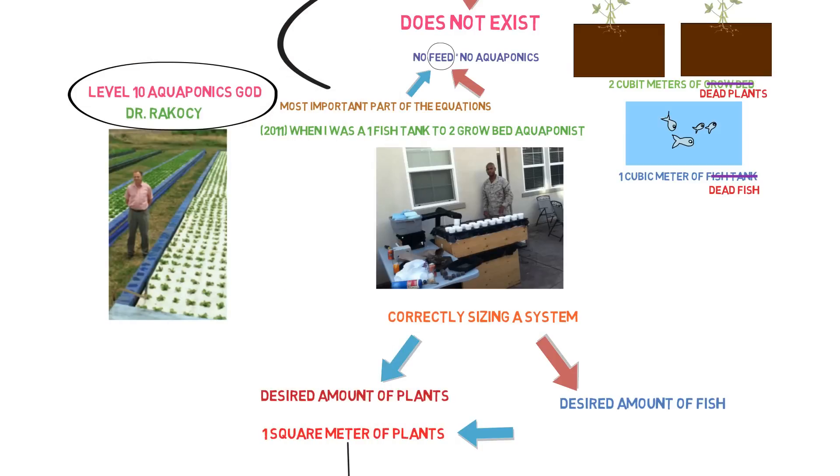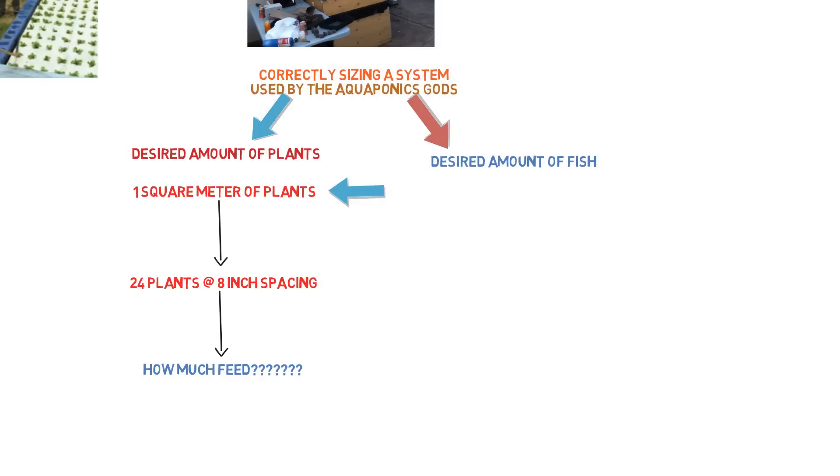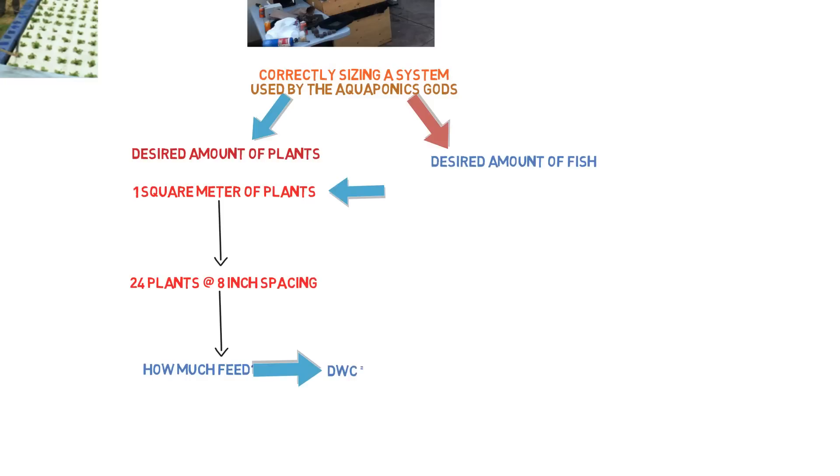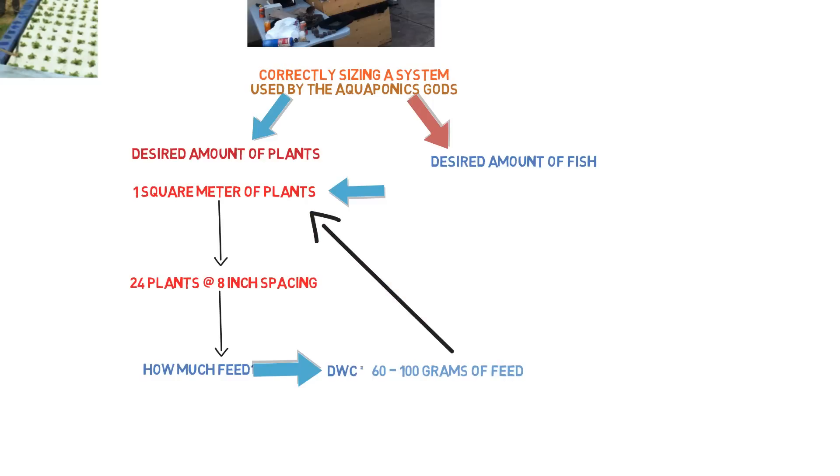And Dr. Rakocy has done the research at the University of Virgin Islands, and nobody uses these methods. Only the gods use these methods. I'm going to put it that way. That's the only people I see using the ratios that have been already scientifically proven instead of just doing the two to three grow bed ratio and not getting anywhere. So the gods use these methods. They already did the research on it, and they found out that deep water culture systems could supply a wide variety of vegetables when you input 60 to 100 grams of feed per square meter of growing area.